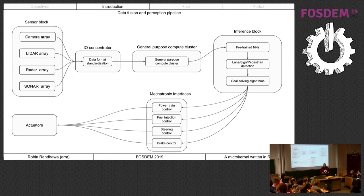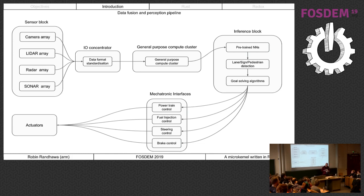You have an inference block - a subsystem able to run pre-trained neural network models trained to detect lanes, signs, and pedestrians. There's a synergy between the general-purpose compute and inference block to come up with a goal expression to solve - for example, someone presses the brake and you decide what to do next. This goal-solving output goes to mechatronic interfaces and actuators. Making all of this safe is very challenging, and microkernels find use on both the general-purpose compute and inference sides.